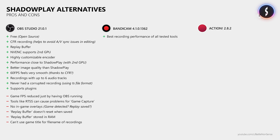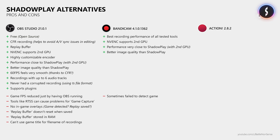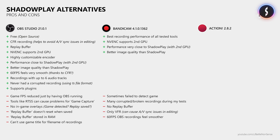Bandicam provided the best performance while recording. It can use a second GPU for NVENC, and when you do, you get performance very close to Shadowplay with video quality better than Shadowplay, though not quite as good as OBS. However, Bandicam sometimes failed to detect the game — I had to launch it multiple times to get the overlay to show. The bigger issue was that when I didn't stop the recording before closing the game, or when the game crashed, the active recording was corrupted and I could not recover it. Bandicam does come with a tool to fix broken recordings, but it doesn't work with MP4 files. It also doesn't have a replay buffer and only records with variable frame rate, which can cause audio and video sync issues. Also, 60FPS recordings in OBS felt smoother, which could be down to OBS using constant frame rate. And Bandicam only supports two audio tracks.